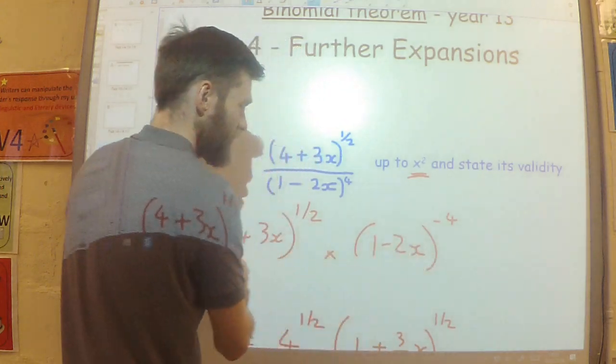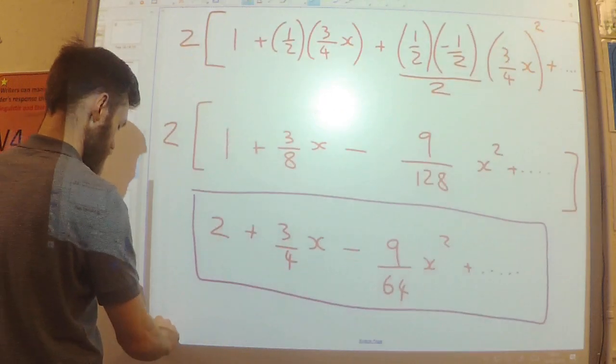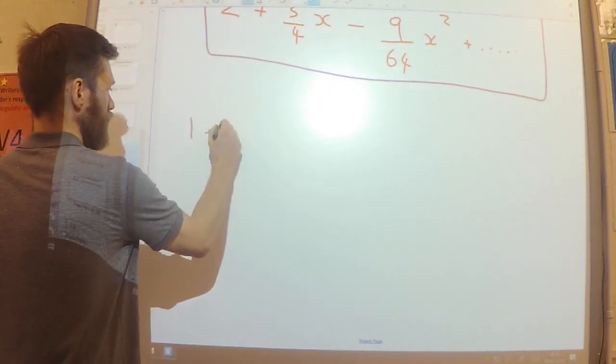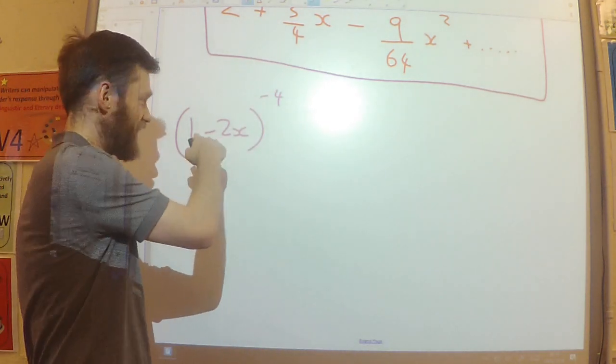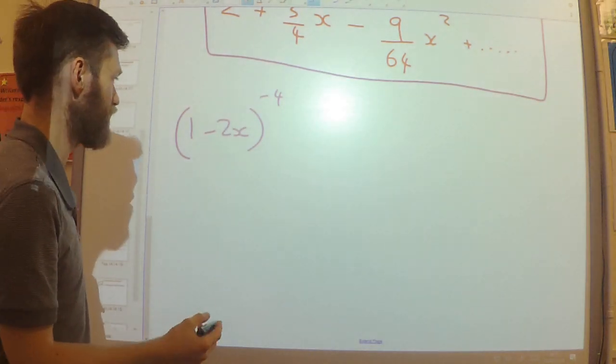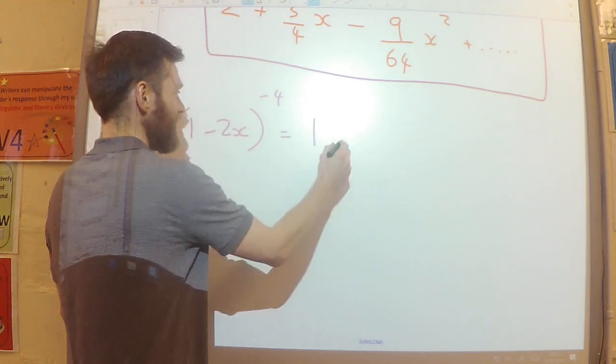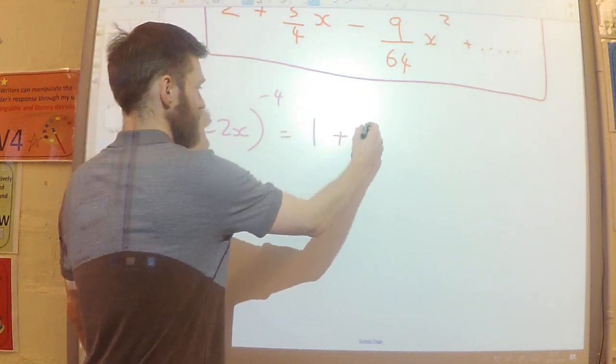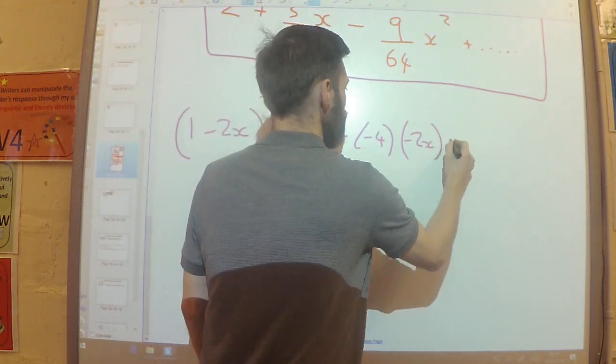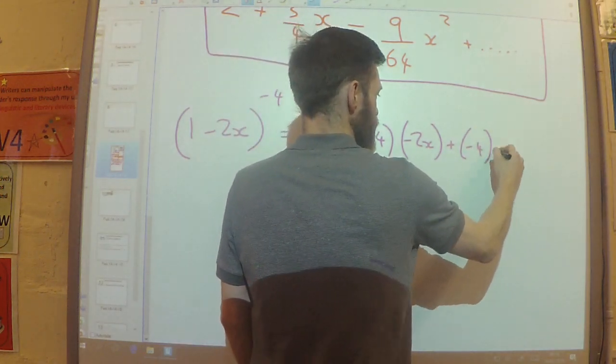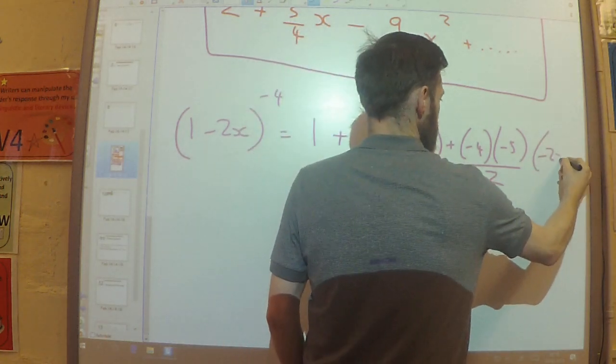We now need to expand this. So exactly the same thing. 1 minus 2x to the power minus 4. Notice that I don't need to do any factorisation here, so I can get straight into actually expanding this out. So 1 plus n, which is minus 4, multiplied by x, which is minus 2x. Plus n times n minus 1 over 2 factorial times x squared.